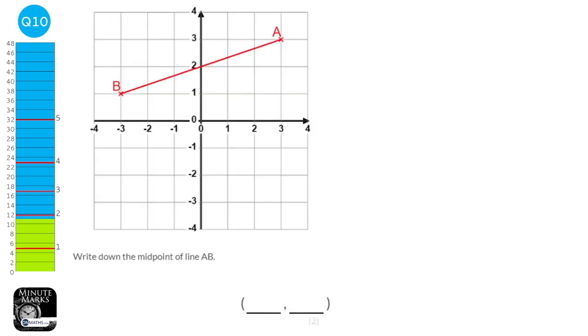The midpoint of a line is just the halfway point of the line. We can see that the halfway point will be here, and the coordinates of that point are (0, 2).